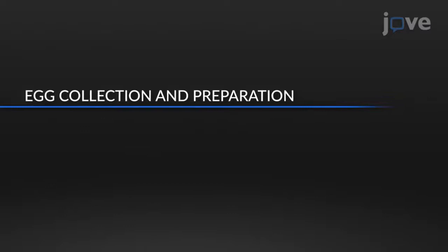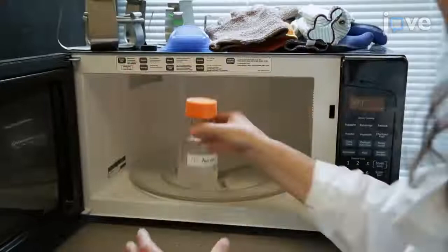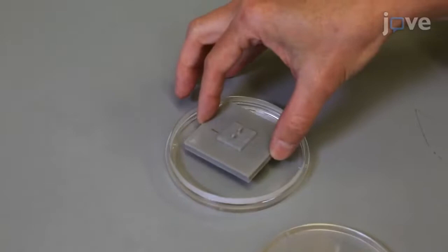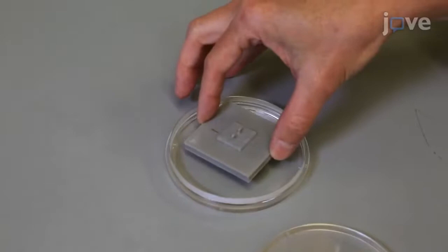First, make 40 ml of 1% agarose in water and pour it into a 10 cm petri dish. Place an egg well stamp on the surface of the agarose before it solidifies. Once the agarose is solidified, remove the stamp to reveal the wells.